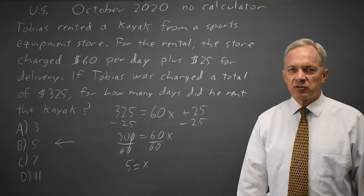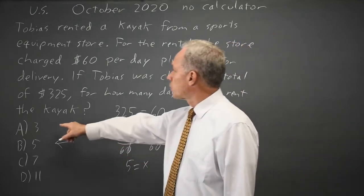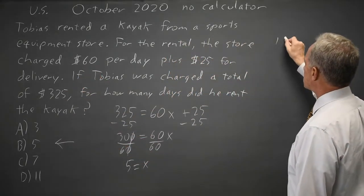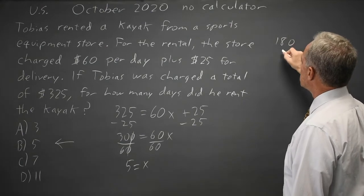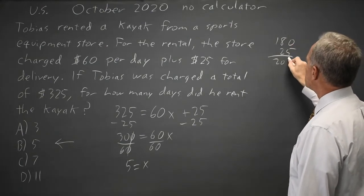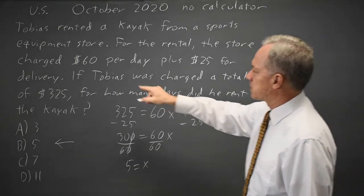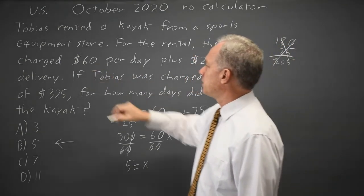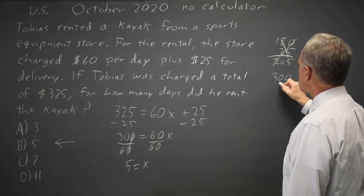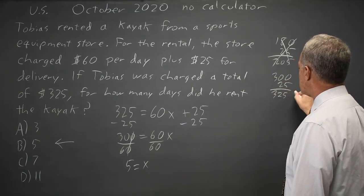Alternatively, I could plug in answer choices. 3 days at $60 a day is $180, plus $25 for delivery is $205, which is not correct. 5 days at $60 per day is $300, plus $25 is $325, which is correct.